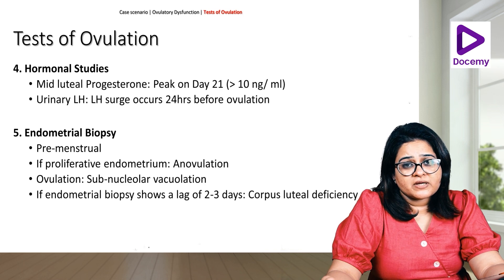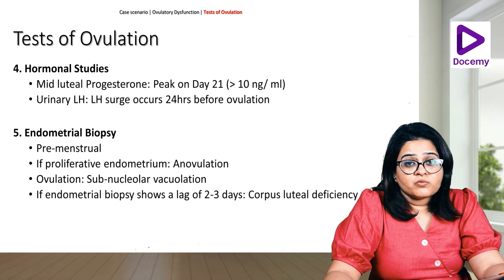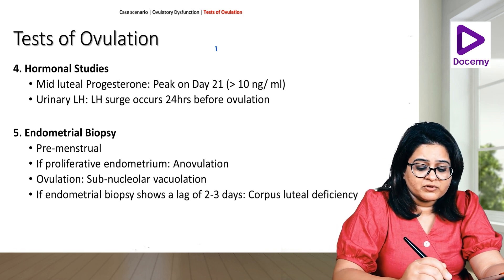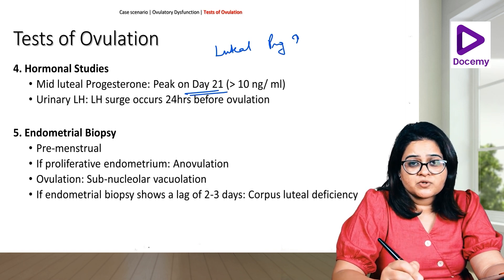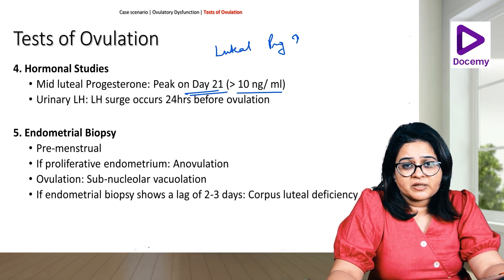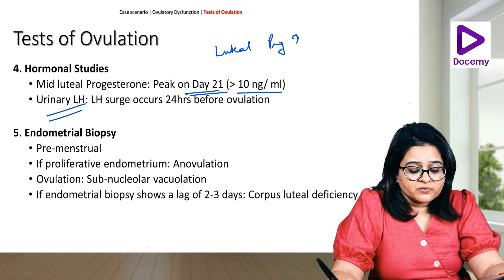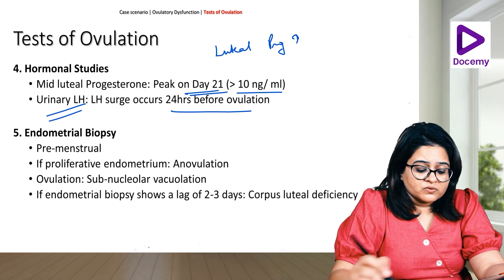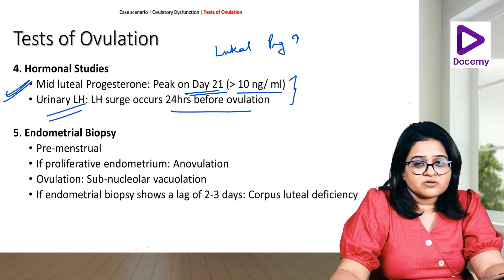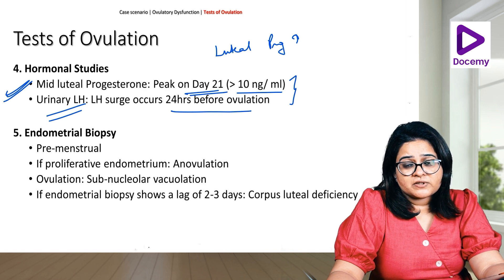Based on history and these simple tests you can more or less tell whether she is having ovulatory cycles, but for confirmatory proof we can do hormonal studies. The best hormonal study is the mid-luteal rise of progesterone. If she has ovulated, progesterone will be high in the luteal phase — we check it on day 21, and it should be more than 10 nanograms per ml. We can also check urinary LH — the LH surge occurs 24 hours before ovulation and urinary LH will appear at that time.